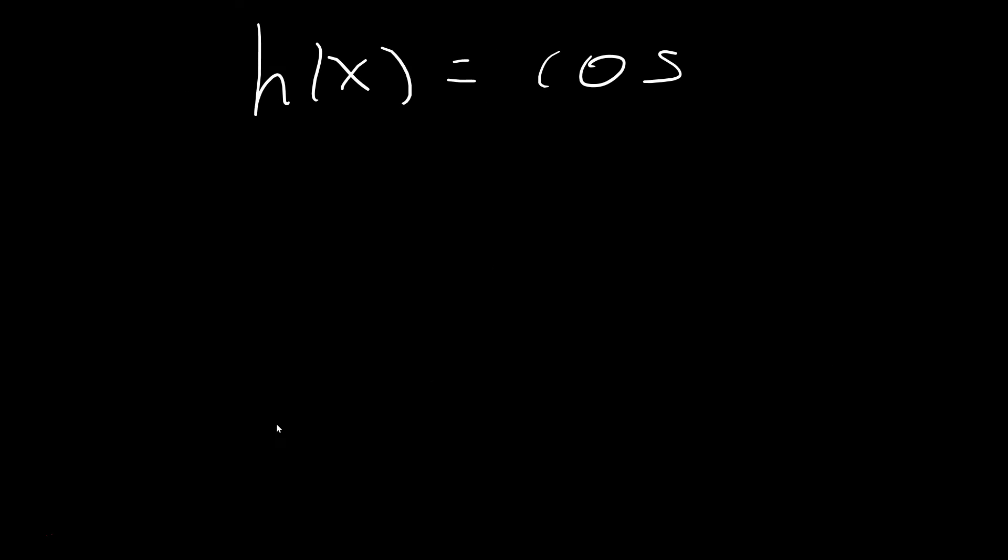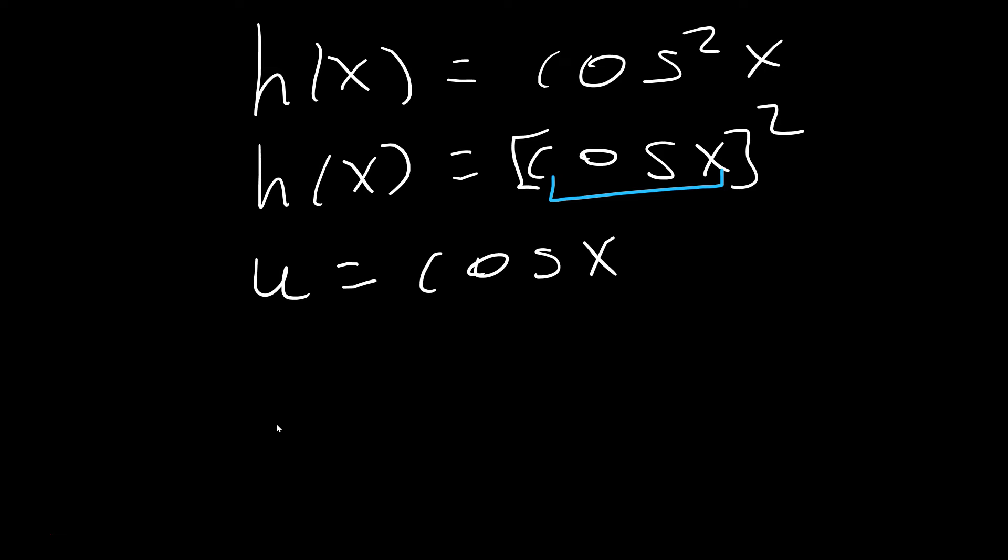Then you have the following. So h of x is equal to cosine squared of x. So here you have to rewrite this first. It's really h of x equals cosine of x, that quantity is squared. Notice that cosine is within brackets, and the 2 is all the way on the outside. So then u, the inside, is cosine x. Then the outside is h of u equals u squared, because cosine is u.